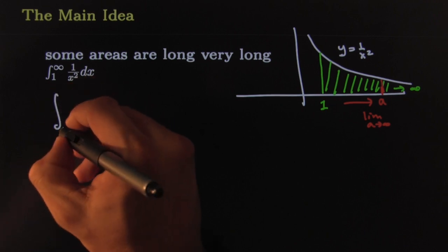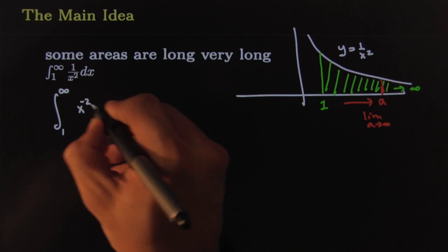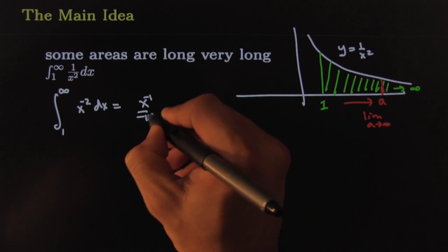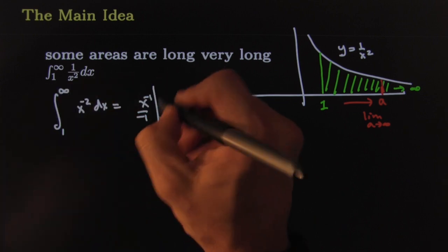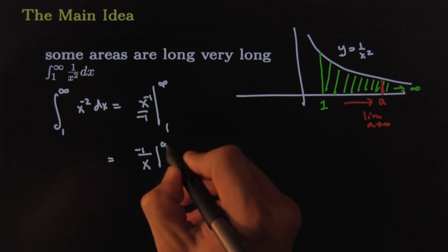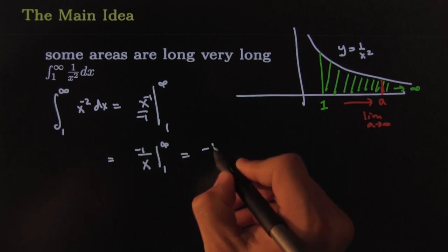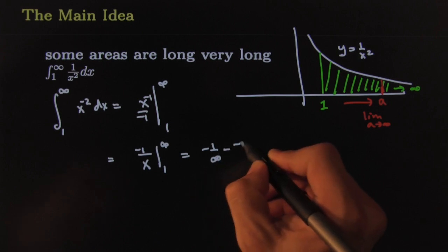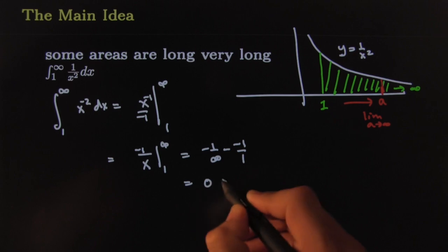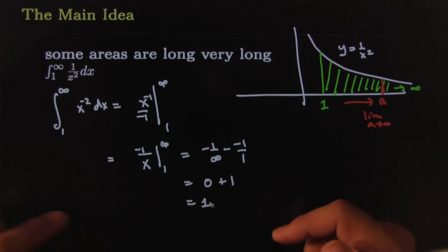Here you take the limit as x goes from 1 to infinity x to the negative 2 dx. The integral would be x to the negative 1 over negative 1 going from infinity to 1. That can be rewritten using your excellent algebra skills as negative 1 over x going from infinity to 1, which will give you 1 over negative infinity minus negative 1 over 1, which gives you 0 plus 1, which gives you 1.